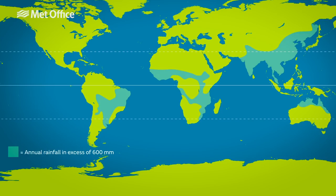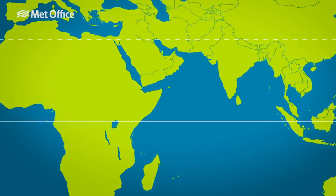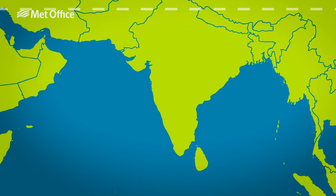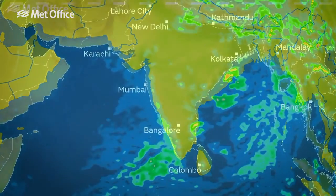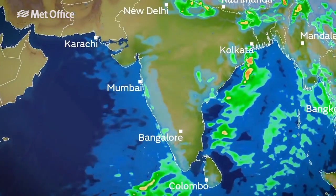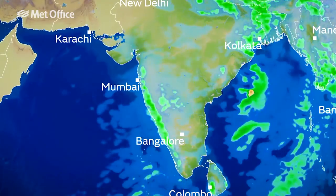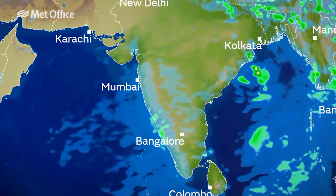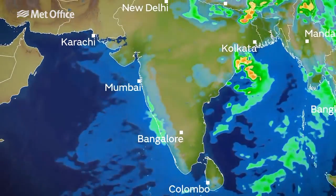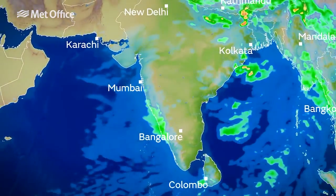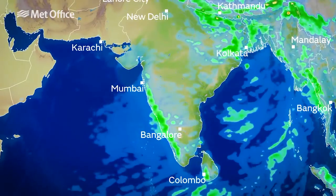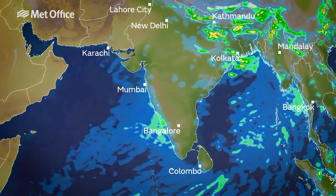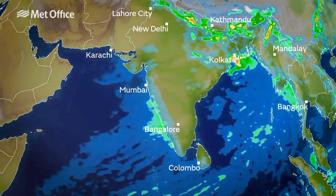More than 60% of the world's population live in regions affected by a monsoon climate. One of the best known is the monsoon that impacts much of South Asia. In parts of India, the seasonal change from dry to wet is so well defined that many areas receive 90% of their yearly rainfall during the summer monsoon.